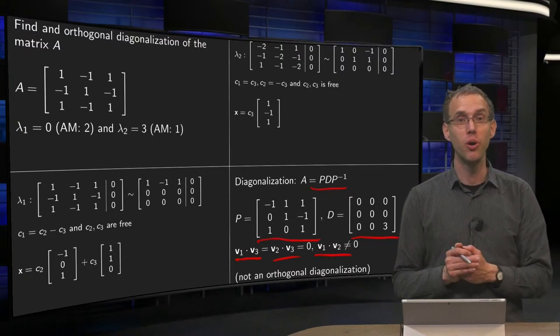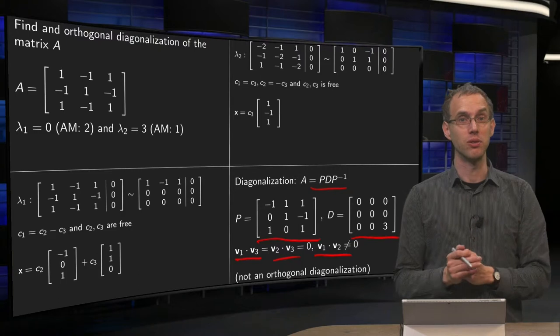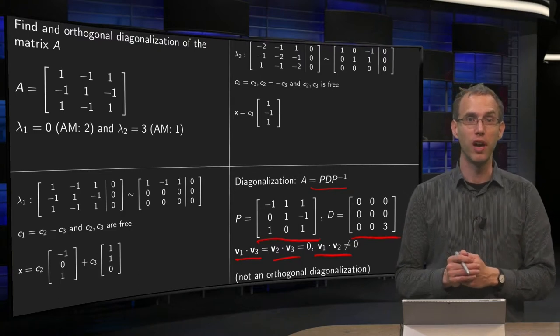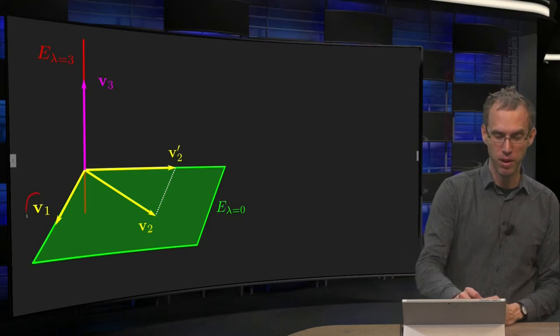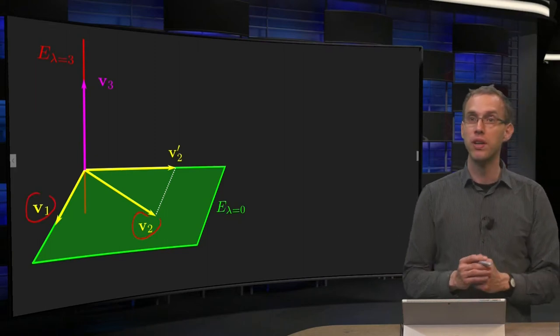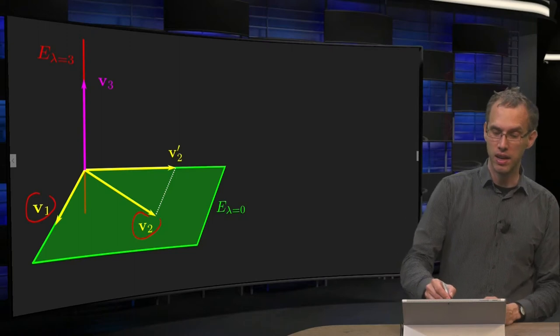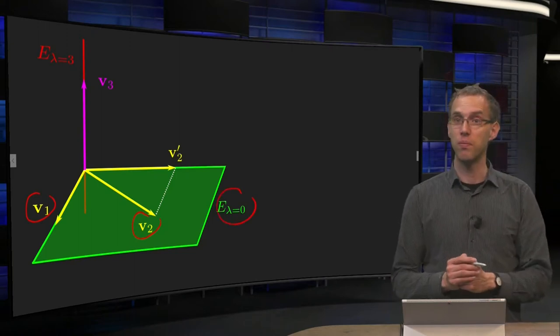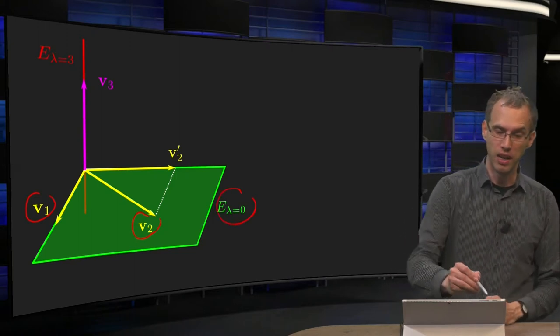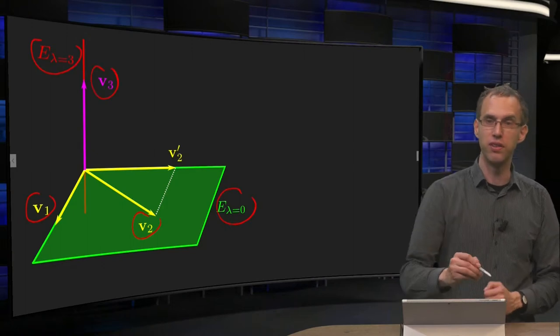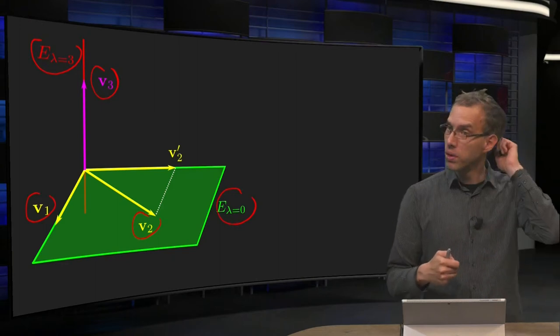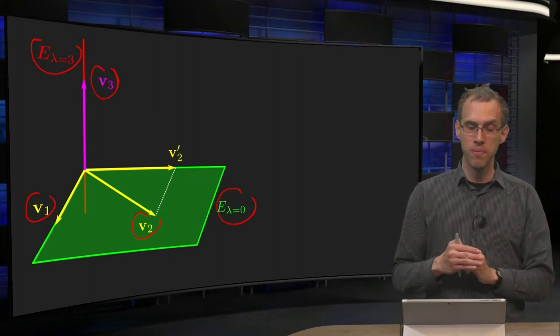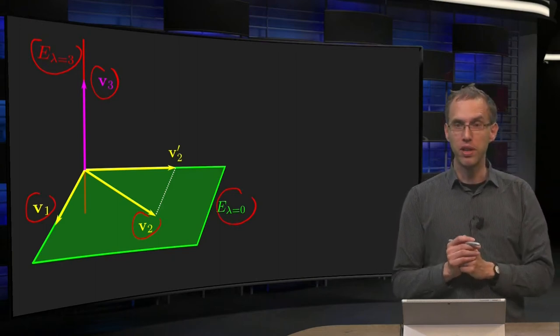So what went wrong? Can we find an orthogonal diagonalization? What do we have to do? So what's going on here? We have the following situation, we have our v1 and our v2. They span together the e-lambda equals zero. Now we have the e-lambda equals three, our vector v3. Well the v3 is already orthogonal to both v1 and v2, so that one is okay.